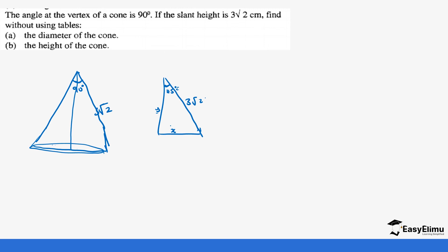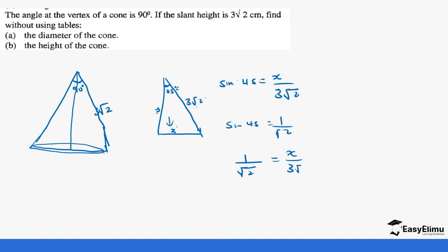Since we want opposite over hypotenuse, we are going to use sine 45, which is opposite — x — over hypotenuse — 3 root 2. We don't want to use tables, but we have sine 45 equals 1 over root 2. So 1 over root 2 equals x over 3 root 2. We multiply both sides by 3 root 2, so x equals 3 root 2 divided by root 2, which gives us x equals 3 centimeters.